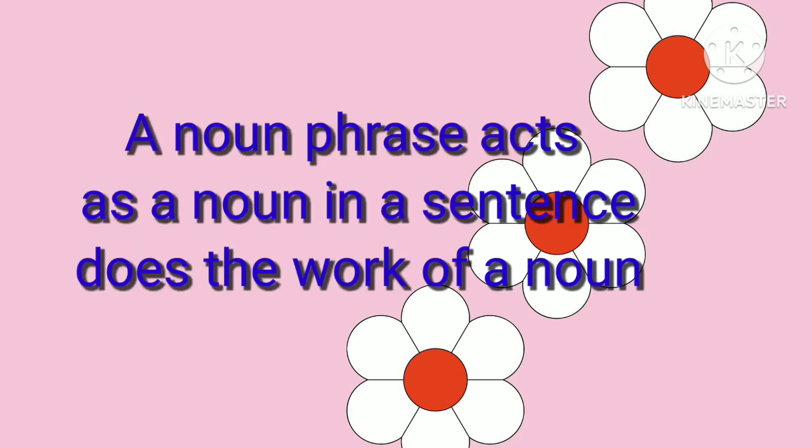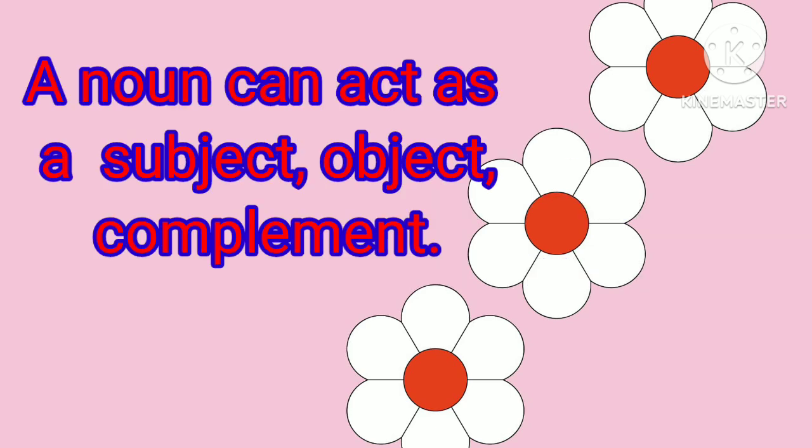A noun phrase acts as a noun in a sentence and does the work of a noun. A noun is a naming word. The functions of a noun are: a noun can act as a subject, object, and complement. The same functions can be done by a phrase, which is called a noun phrase.